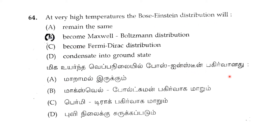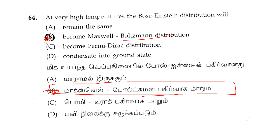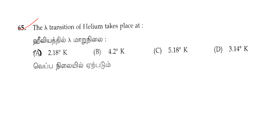Question 65: the lambda transition of helium takes place at — option A, 2.18 degrees Kelvin is the correct answer for question 65.